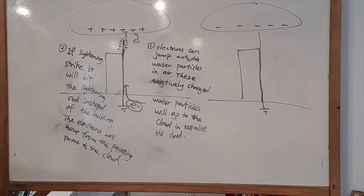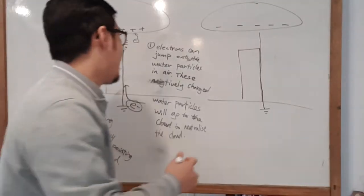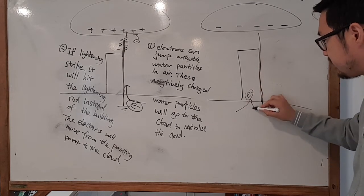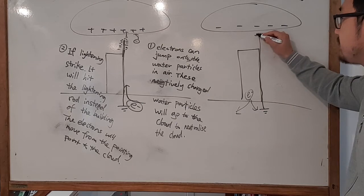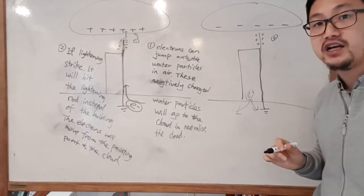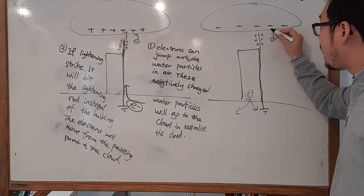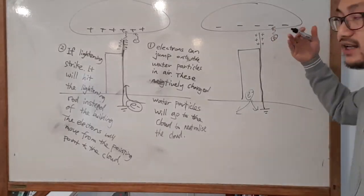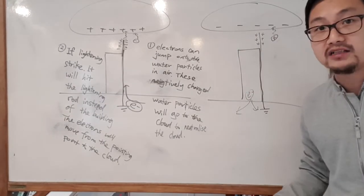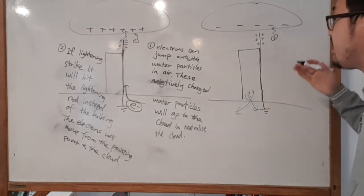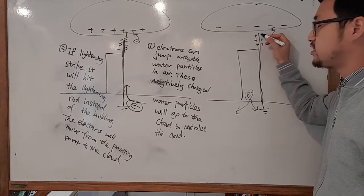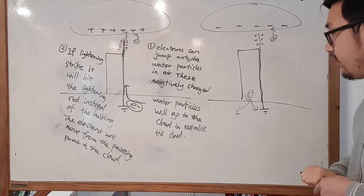With a negative cloud, the electrons get pushed away from the rod tip, making that area positively charged. That positive charge can cause water molecules to become positive, which then travel upward to neutralize the negative cloud — again reducing the chance of lightning. And if lightning does happen, the rod is positive and the lightning is attracted to it, so electrons jump onto the rod and flow safely away.